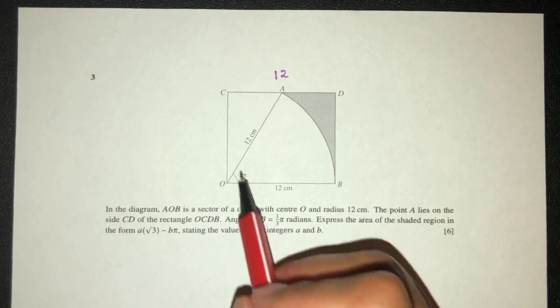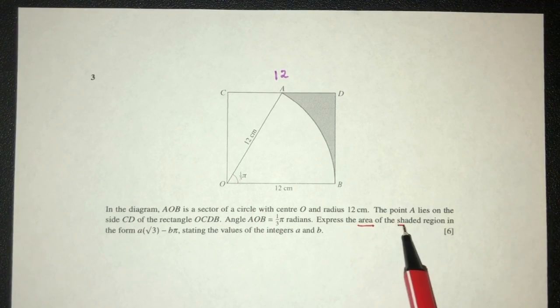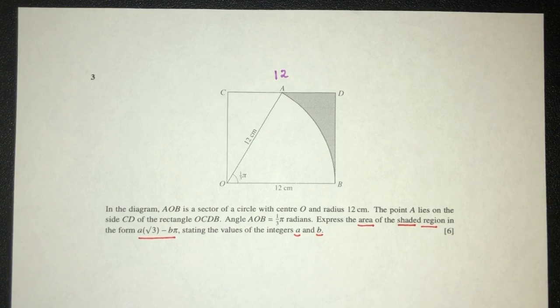Now, the angle AOB is 1/3 pi. Express the area of the shaded region in form of this, stating the values of A and B. Now, A and B, they are integers. Integers means whole numbers.